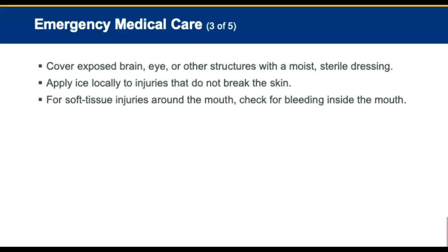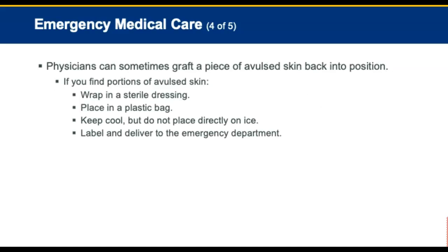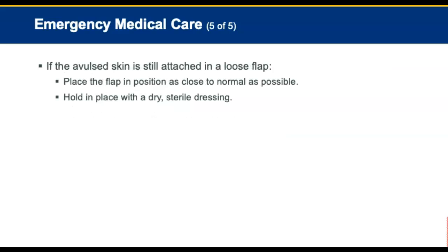For soft tissue injuries around the mouth, check for bleeding inside the mouth. If you find portions of avulsed skin, wrap them in sterile dressing, place them in a plastic bag, and keep them cool. If the skin is still attached in a loose flap, place the flap in the position that is as close to normal as possible.